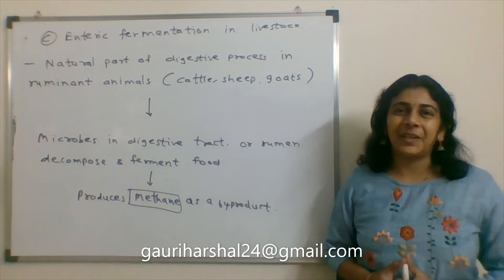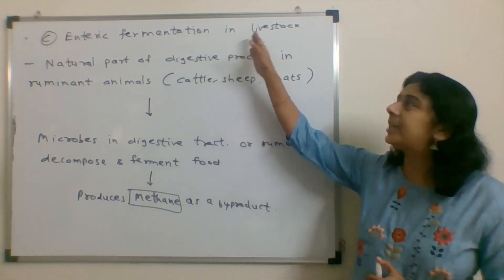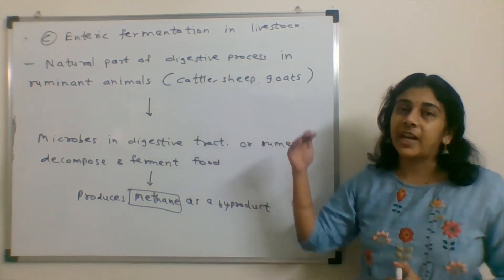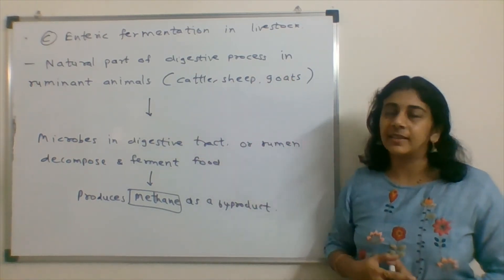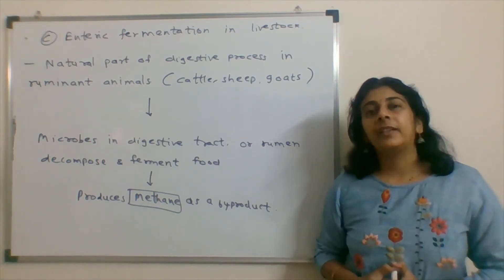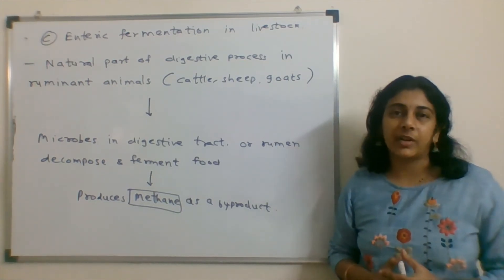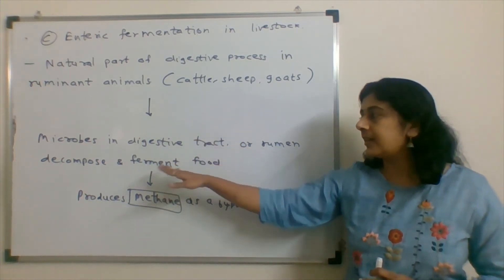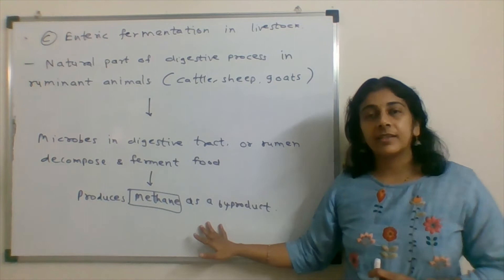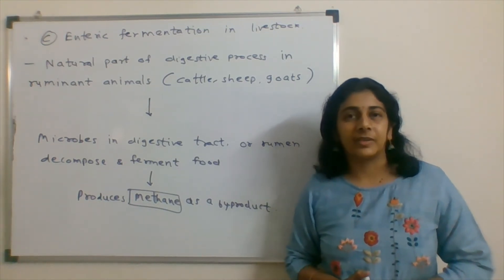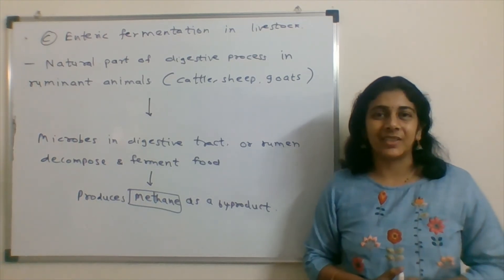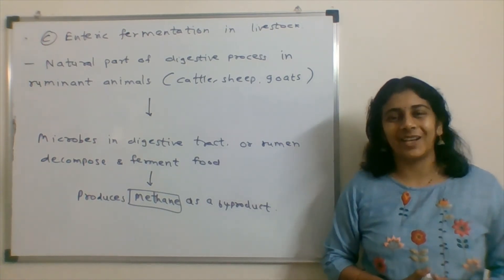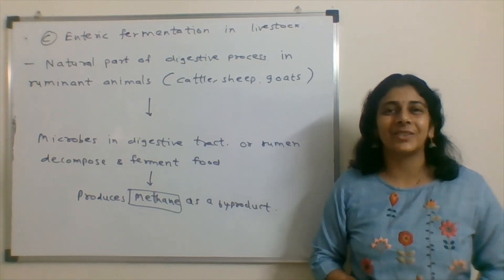Option C is enteric fermentation in livestock. This is the natural part of digestive process in ruminant animals like cattle, sheep, goats, and buffaloes. In the rumen, in the digestive tract, there are microbes which carry out fermentation and decompose the food. In this process, there is production of methane as a by-product, which is released in the atmosphere. Methane is a greenhouse gas, so this process also supports the greenhouse effect and not a reverse.